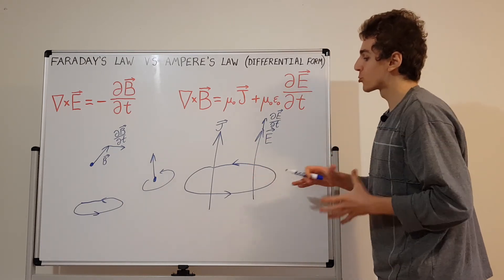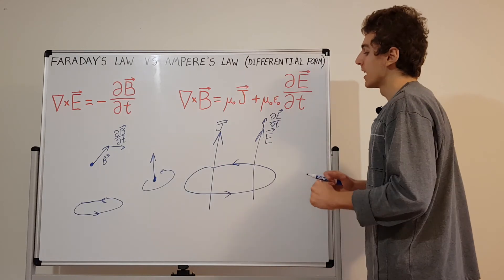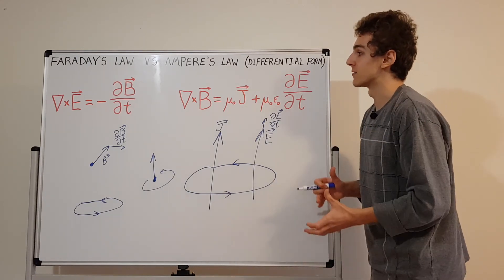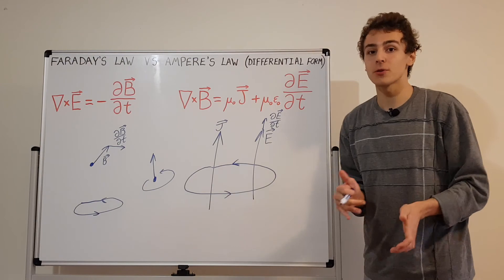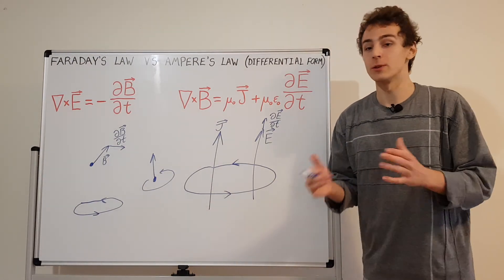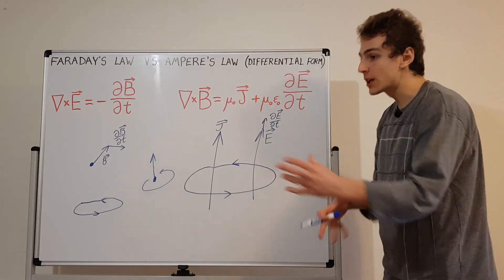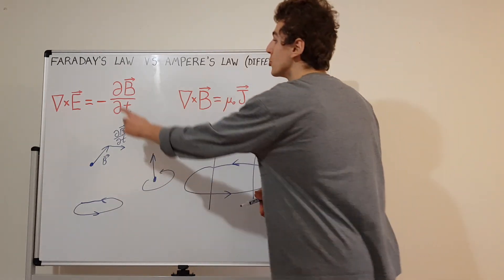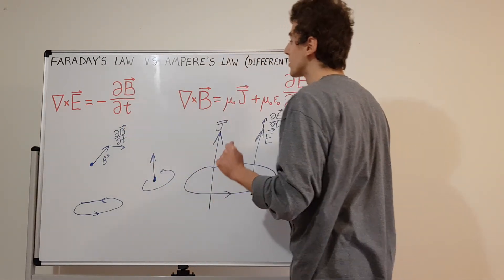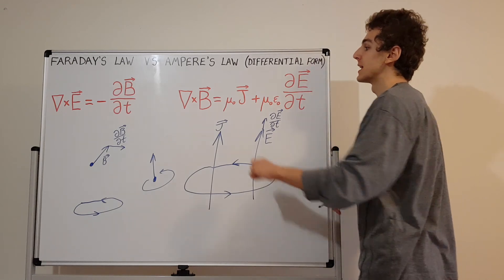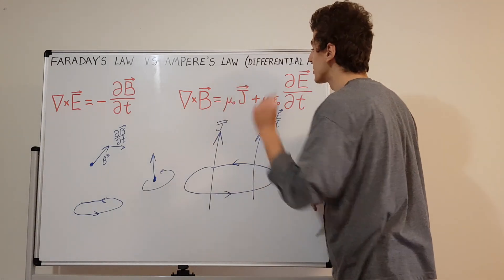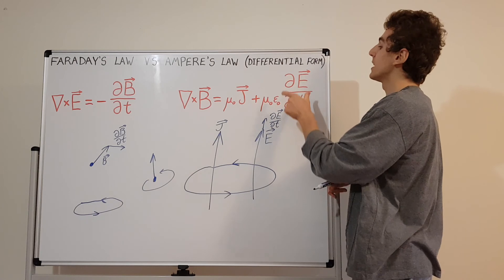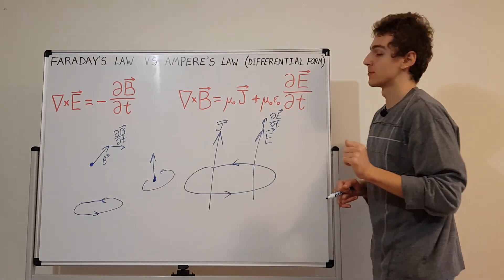This has been a general theoretical overview and comparison of Faraday's law and Ampere's law in differential form. Try to draw these diagrams and see for yourself how electromagnetism behaves: if you have a circulation in the electric field, it must be due to a changing magnetic field; and if you have a circulation in the magnetic field, it must be due to either current flowing or a changing electric field.